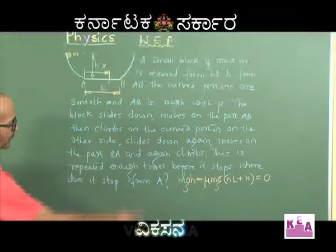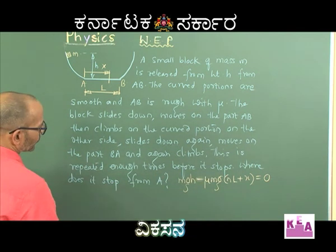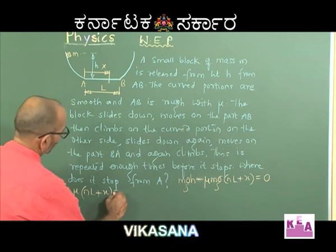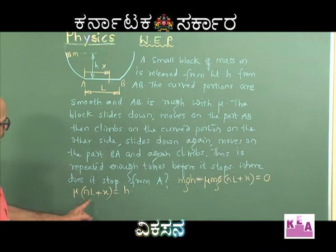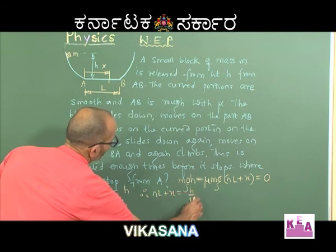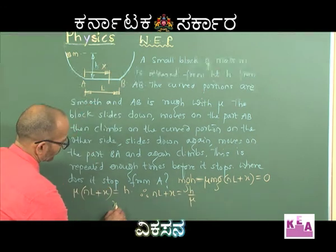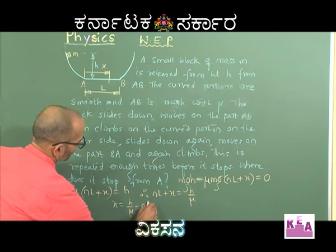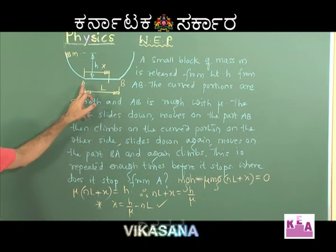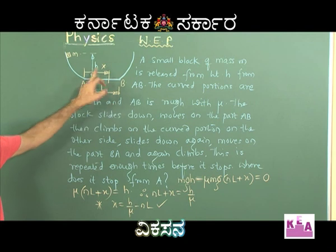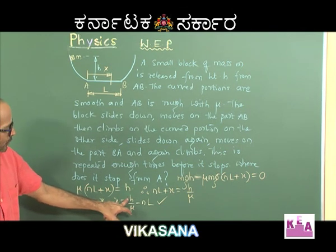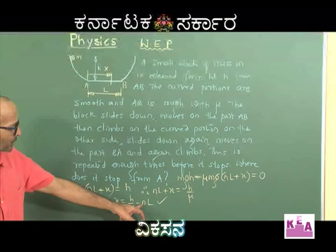This should be equal to change in kinetic energy which is 0. Solving this, MG gets cancelled and you have (nL + X) times mu equal to H. So nL plus X equals H by mu, and X equals H/mu minus nL. That is the answer. The block stops finally from point A at a distance X, which depends on how much energy it had originally and how many trips it makes on the flat portion AB.